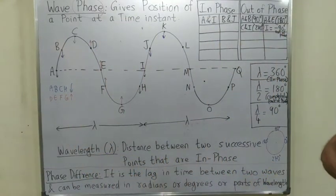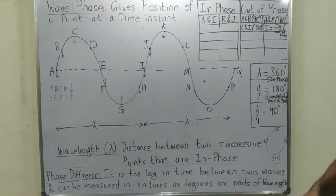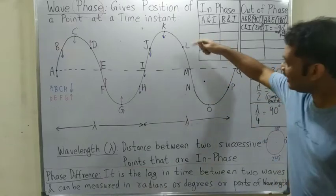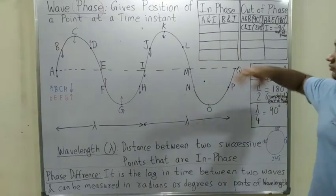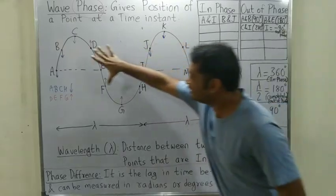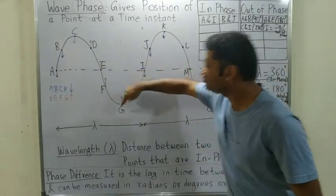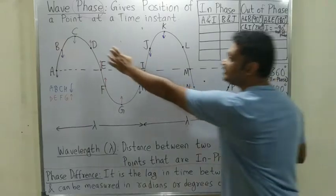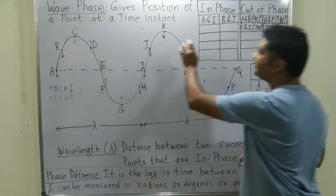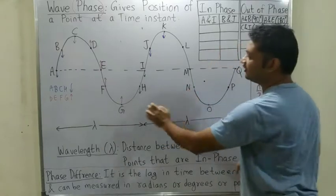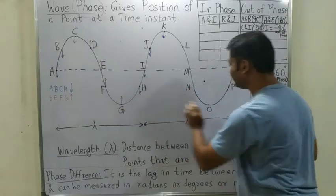Now let us discuss points L, M, N, O. These points are exactly similar to points D, E, F, G. D's equivalent is L, E's equivalent is M, F's equivalent is N, and G's equivalent is O.